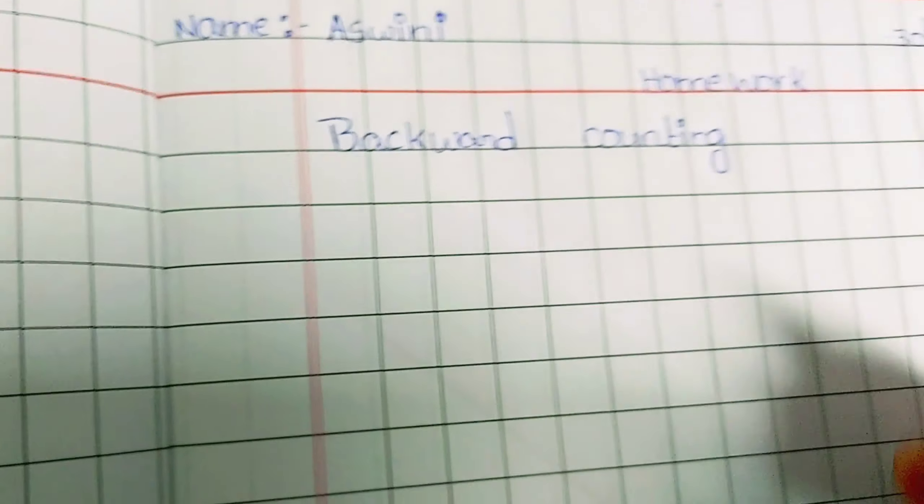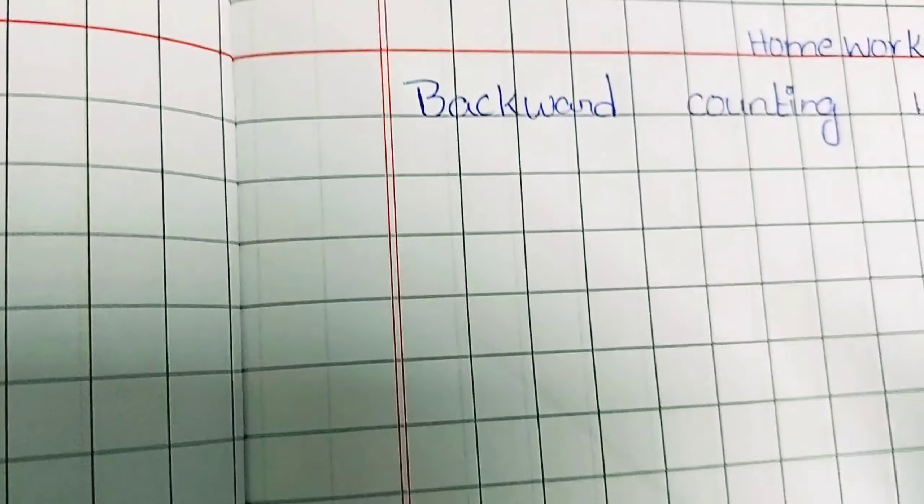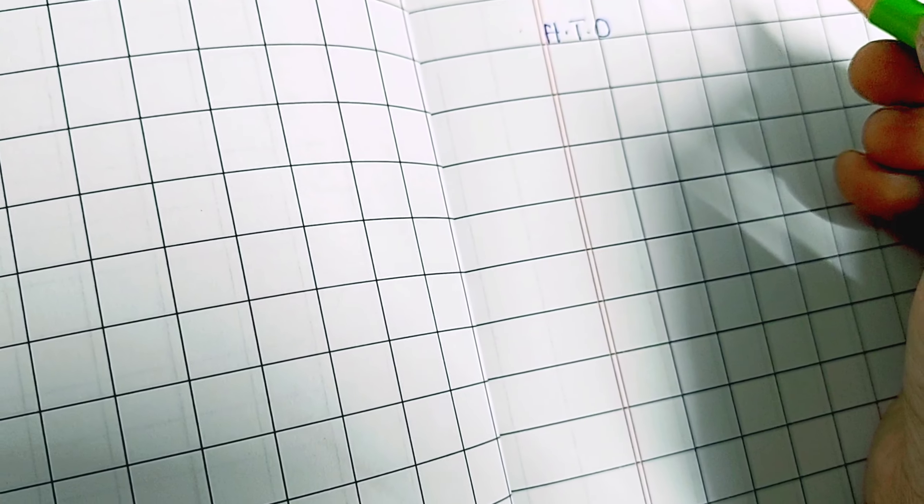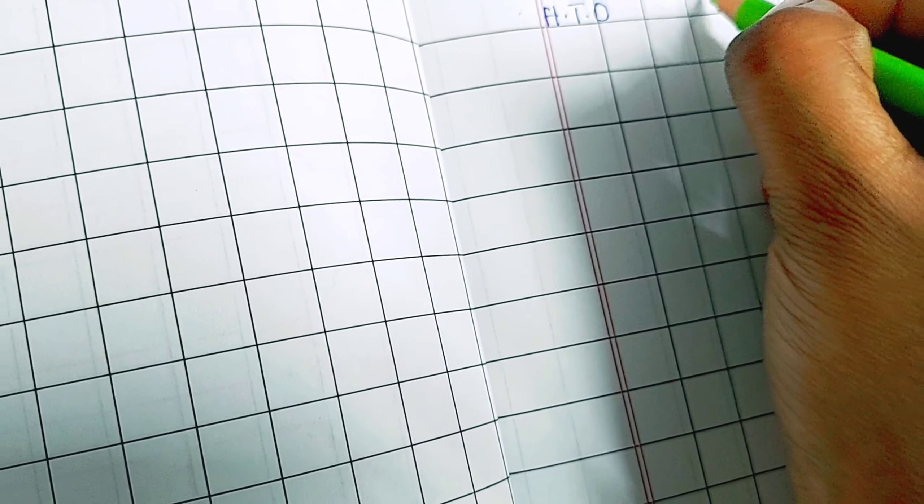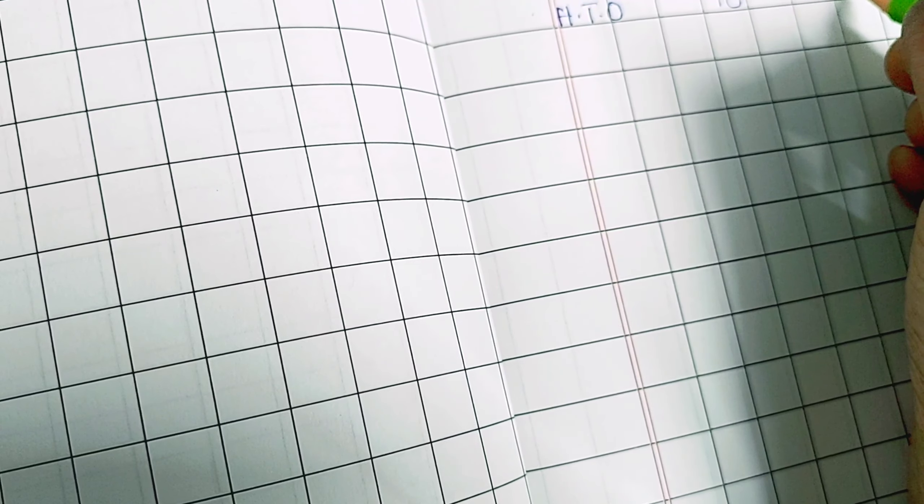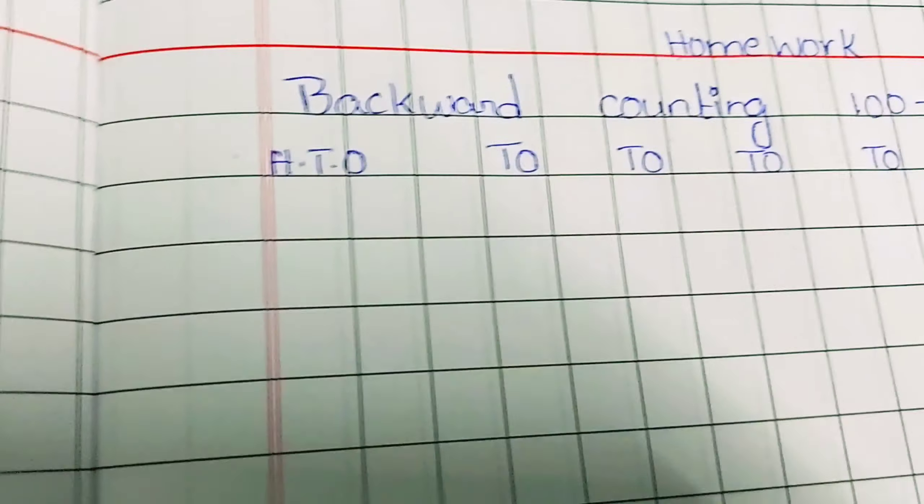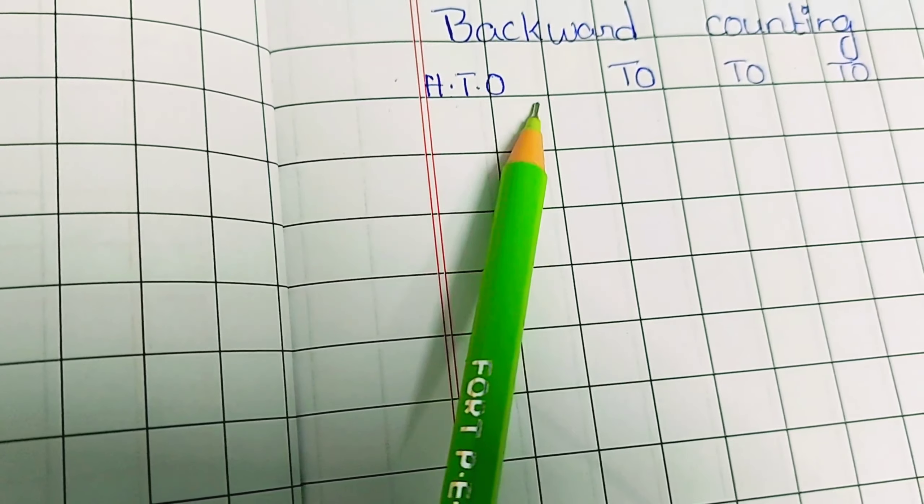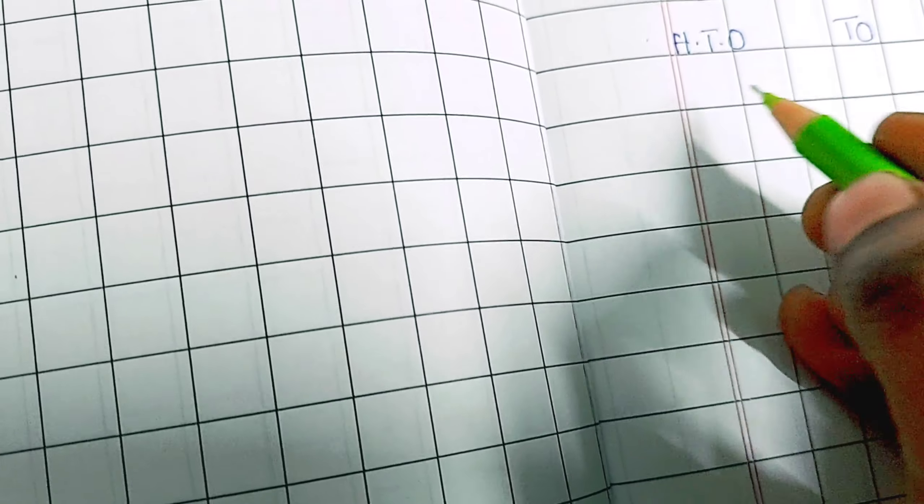Backward counting, 100 to 1. So next, here I am showing that card numbers. Now you can write here.